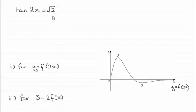So we need to solve this equation, tan 2x equals root 2. So the next step would be to take the inverse tan to both sides, and that would leave us with 2x equals the inverse tan of root 2. And we need to find our solutions for this.